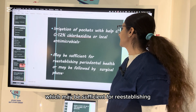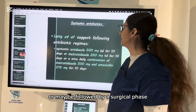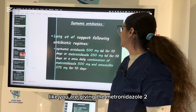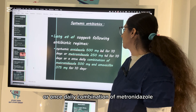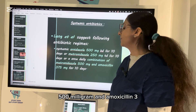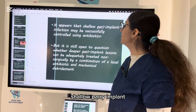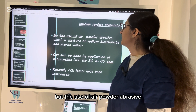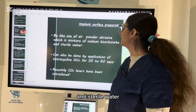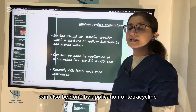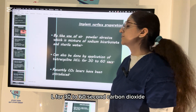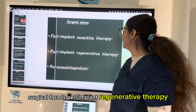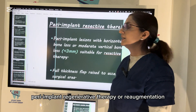Debridement of peri-implant biofilm is done using a plastic curette, and irrigation of the pocket with 0.12 percent chlorhexidine or local antimicrobial may re-establish peri-implant health or may be followed by a surgical phase. Systemic antibiotics include metronidazole 250 mg TDS for 10 days, or a combination of metronidazole 500 mg and amoxicillin 375 mg for 10 days. Shallow peri-implant infection may be controlled with antibiotics alone. Air-powder abrasive — a mixture of sodium bicarbonate and sterile water — can also be used, as well as application of tetracycline HCl for 30 to 60 seconds. Carbon dioxide lasers have been introduced to clean the implant surface. The surgical phase includes resective therapy, regenerative therapy, or re-osseointegration.